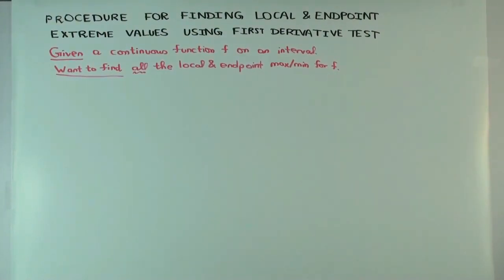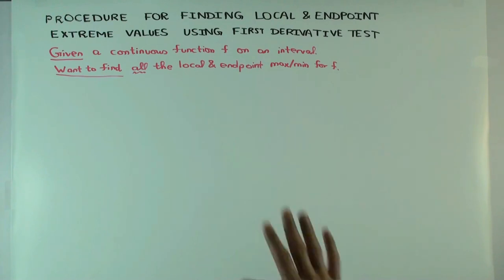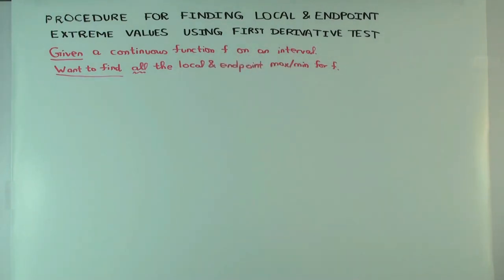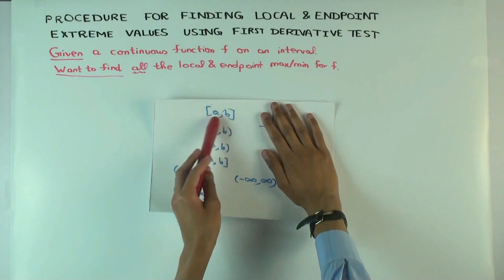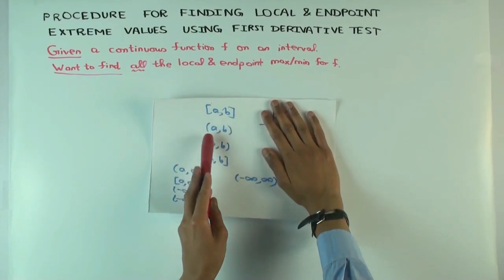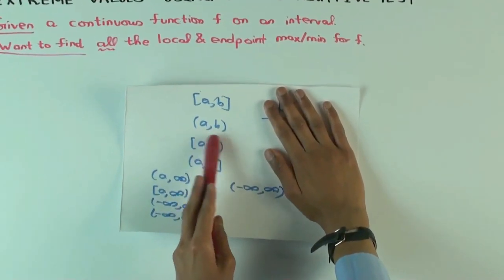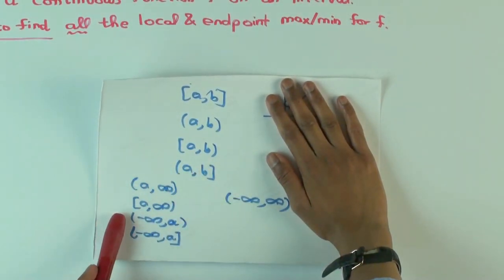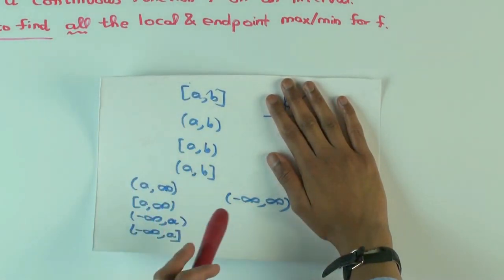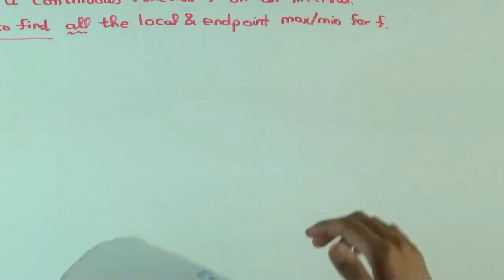The goal of this talk is to go over a procedure that will allow us, starting with a continuous function on an interval. When I say interval, I actually include all of these possibilities: closed with both sides of finite endpoints, open bounded, half closed, half open bounded, and then all the ones which are stretched to infinity. I'm including all of these possibilities when I say interval, and I have a continuous function.